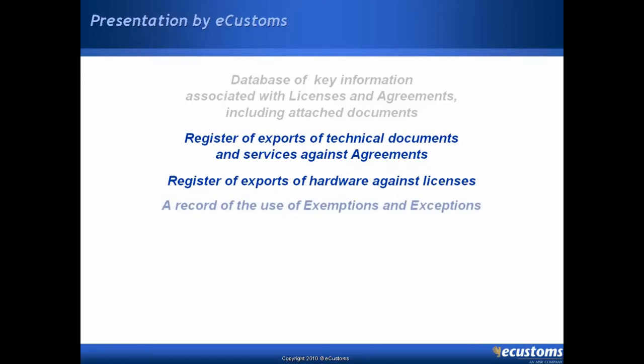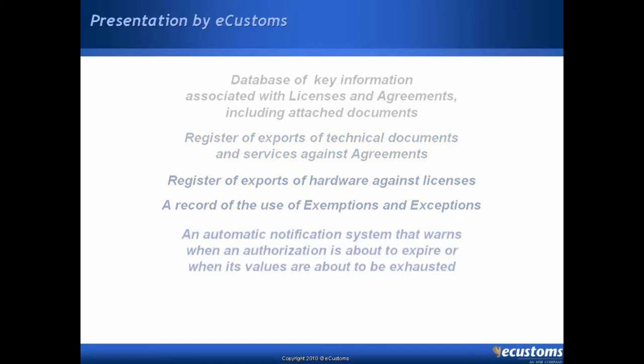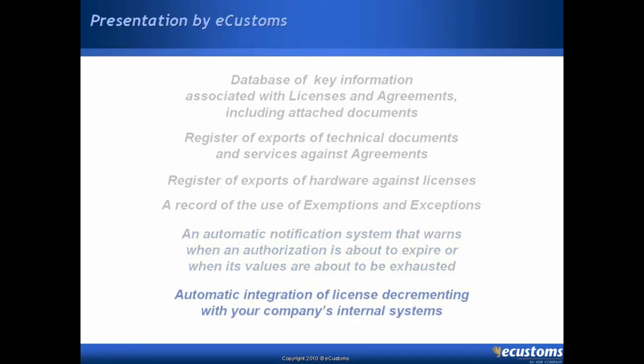The system also includes the ability to record the use of exemptions and exceptions. There is a notification system that sends out emails in the event that a license or agreement is about to expire, or the associated values and dollar amounts of various items on either of those licenses or agreements are about to be exhausted.